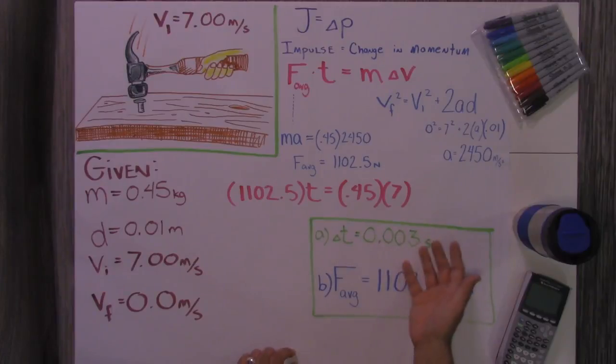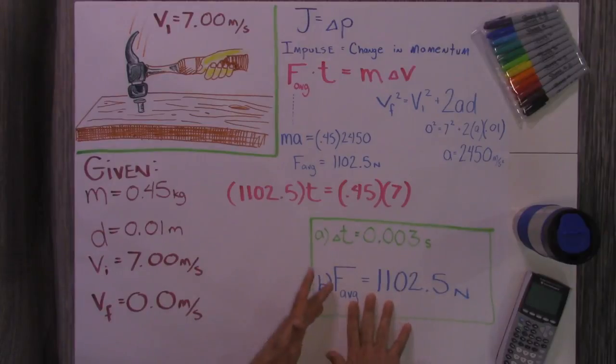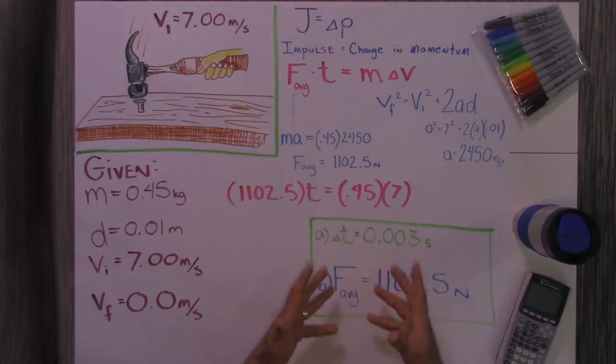And I thought, does that make sense? It seems awfully fast. Well, yeah, when a hammer goes from seven meters per second to zero in one centimeter, it's going to happen real fast. And by that time, I already knew the average force was 1,102.5 Newtons.